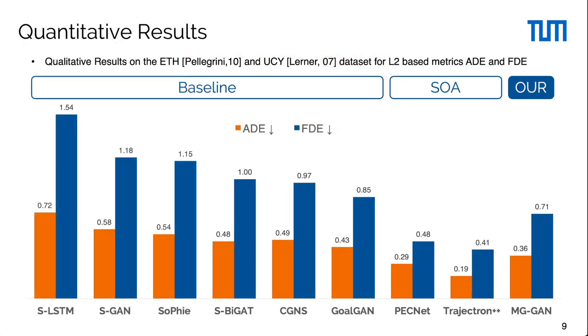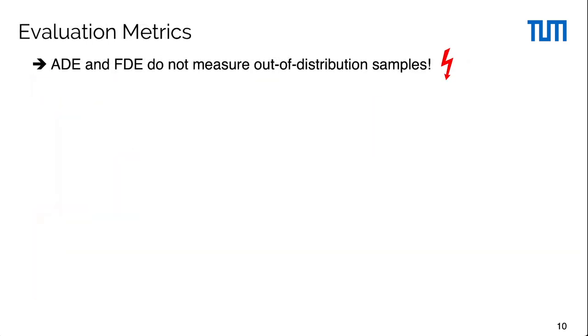We compare our method against state-of-the-art methods on the ETH and UCY dataset. While achieving competitive results, we do not produce new state-of-the-art results on these benchmarks. However, model evaluation based on ADE and FDE metrics is not sufficient when assessing the quality of predictions. That's because these metrics do not consider the overall quality of predictions and thus are unable to measure out-of-distribution samples.